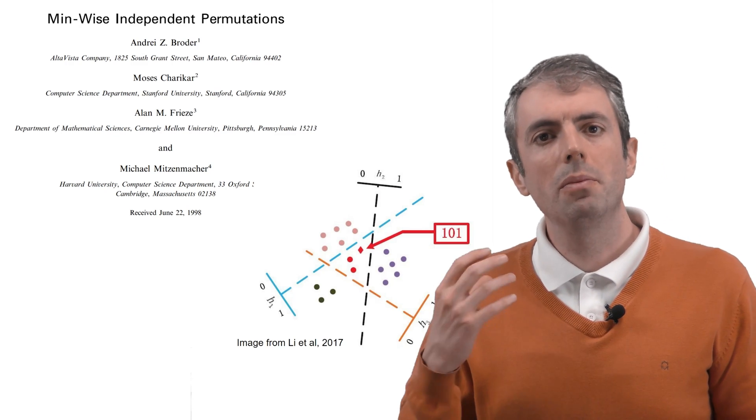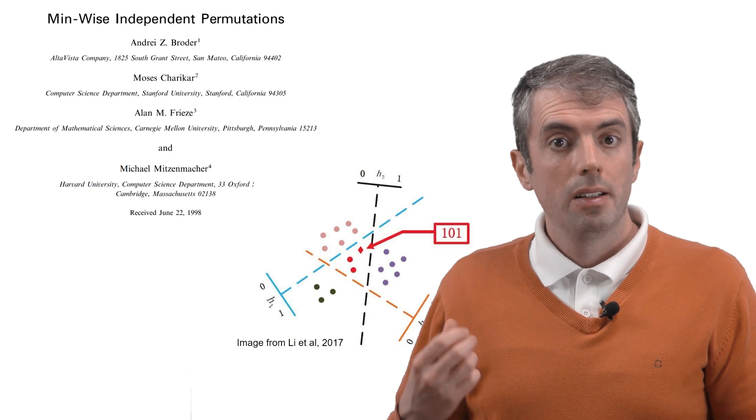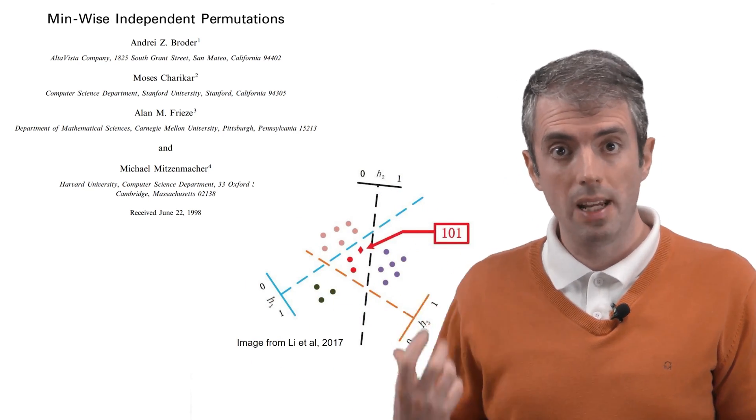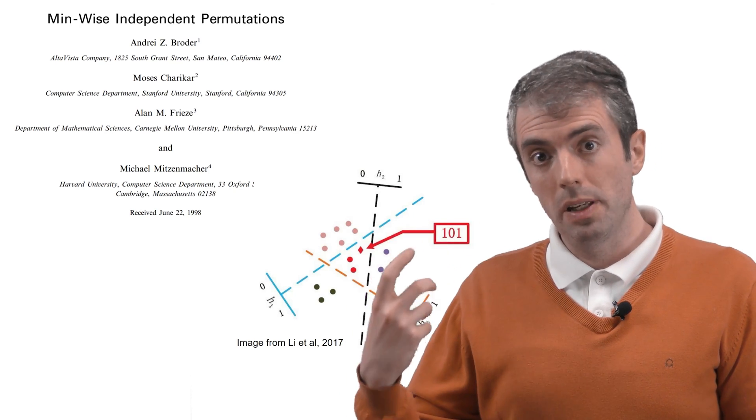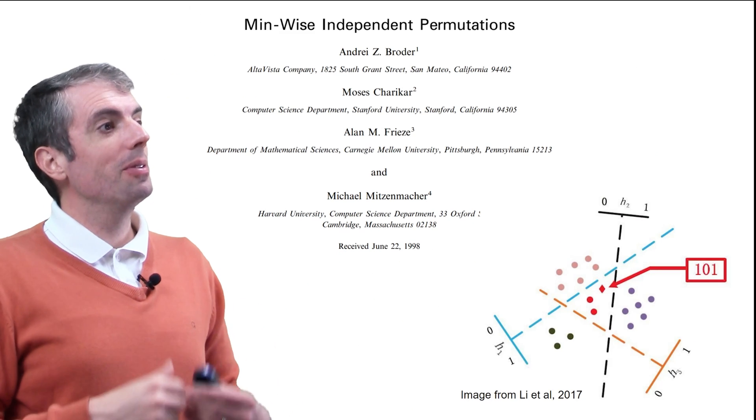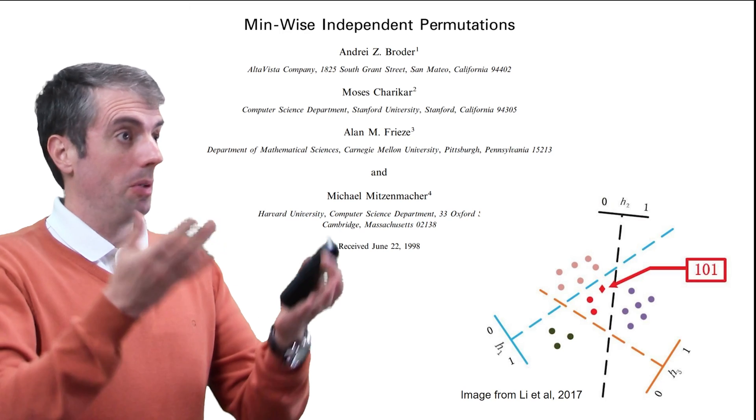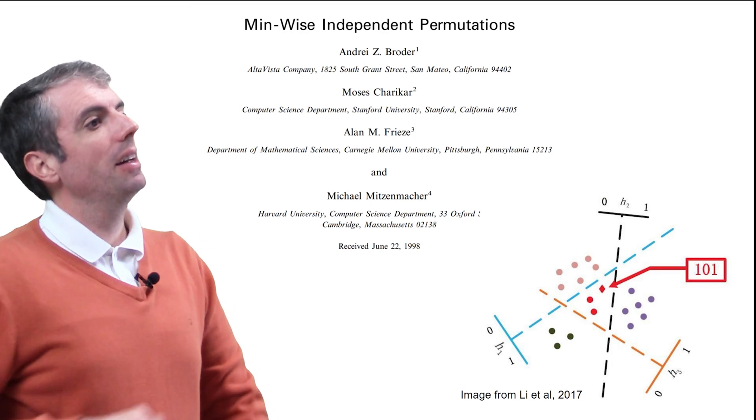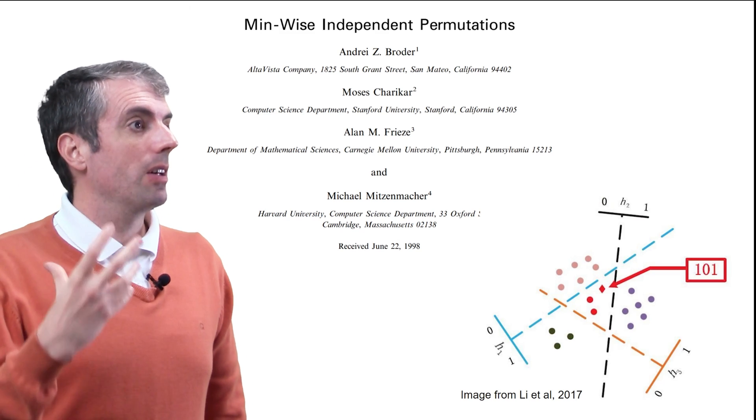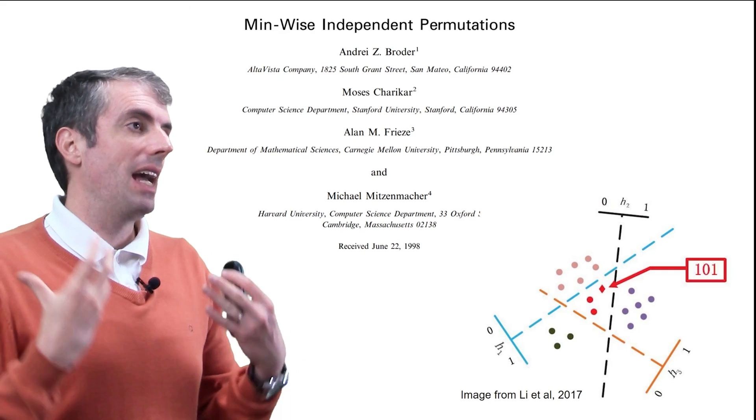A seminal paper called Minwise Independent Permutation said that you shouldn't do this. For big sparse vectors, instead, create new vectors and do your computation in a lower-dimensional space instead. If you use hash functions based on some distance function, for example, cosine similarity, our old friend, if you use some distance function like that to create these representations, this is called locality-sensitive hashing.